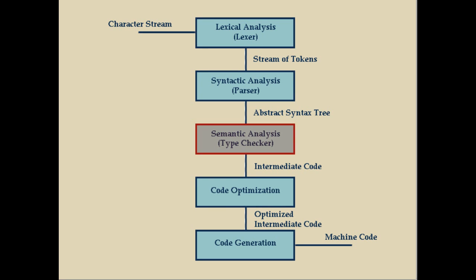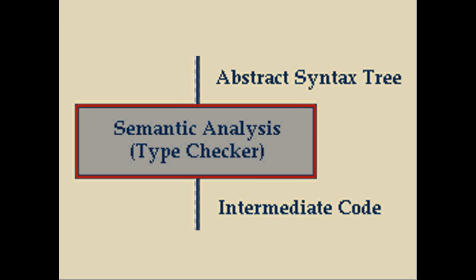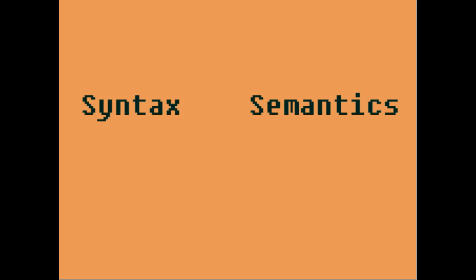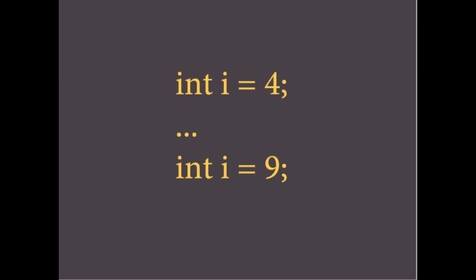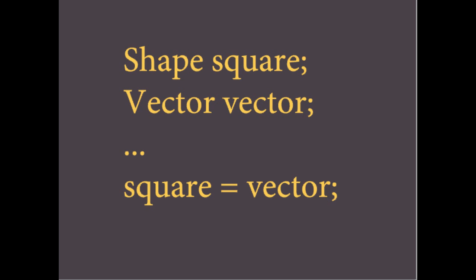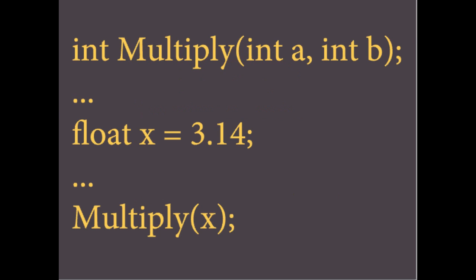Now that the syntax of your program has been validated, the compiler enters the semantic analysis phase, performed by what's sometimes called the type checker. Taking the abstract syntax tree from the parser as input, the type checker identifies semantic errors within your program. Semantic errors may be syntactically correct and adhere to the grammar rules of the language, but still be invalid within the context of the code. Consider an undeclared variable assignment — the assignment statement itself is legal, but without the variable first being declared, this statement is invalid. Other semantic errors include multiple declarations of the same variable, data type inconsistencies in assignment statements, and calling functions with the wrong number or type of arguments.